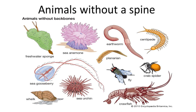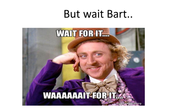Other invertebrates include mollusks — chitons, snails, bivalves, squids and octopuses — annelids such as earthworms and leeches, and cnidarians — hydras, jellyfish, sea anemones and corals — which are all invertebrates.